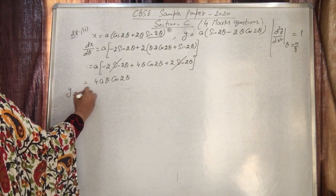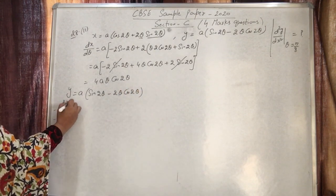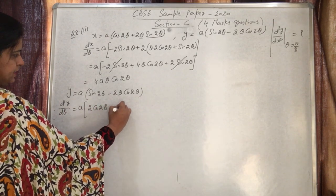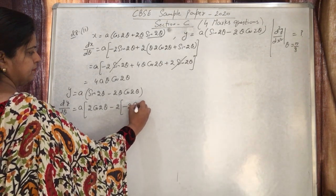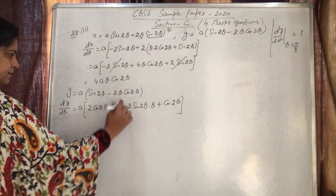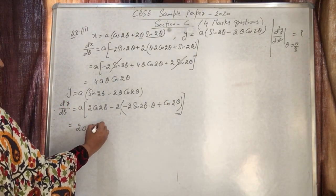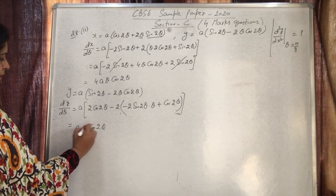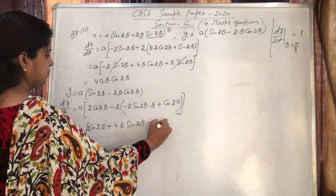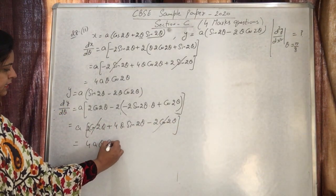For y = a(sin2θ - 2θcos2θ), we find dy/dθ. Differentiating: 2cos2θ minus the product rule on 2θcos2θ gives 2cos2θ - (2cos2θ - 4θsin2θ). The 2cos2θ terms cancel, leaving dy/dθ = 4aθsin2θ.